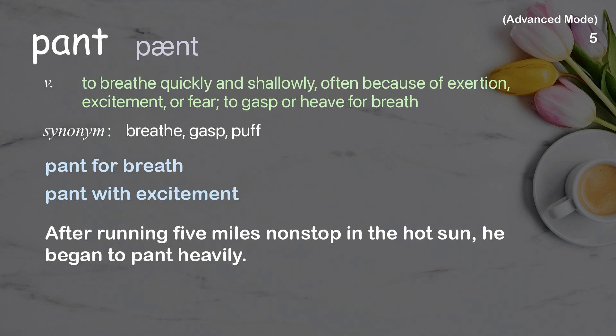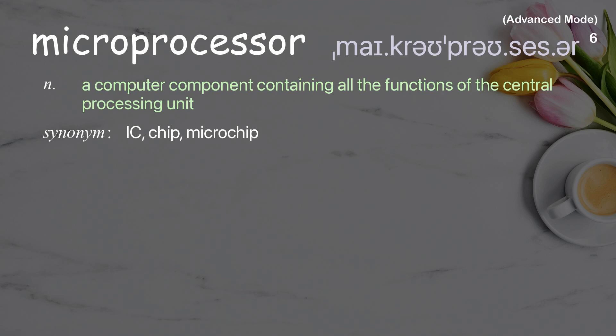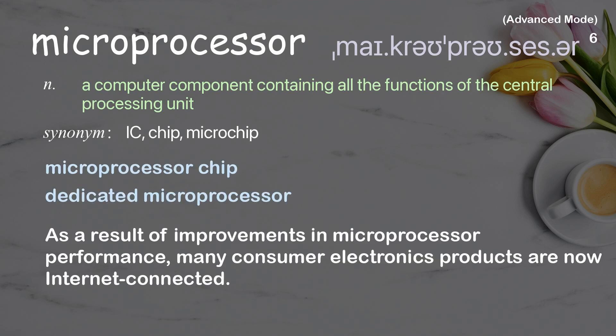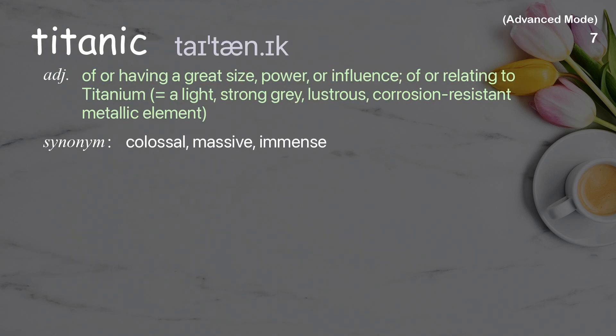After running five miles non-stop in the hot sun, he began to pant heavily. Microprocessor: a computer component containing all the functions of the central processing unit. Examples: microprocessor chip, dedicated microprocessor. As a result of improvements in microprocessor performance, many consumer electronics products are now internet connected.